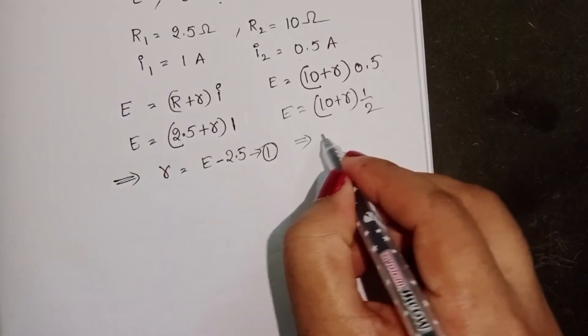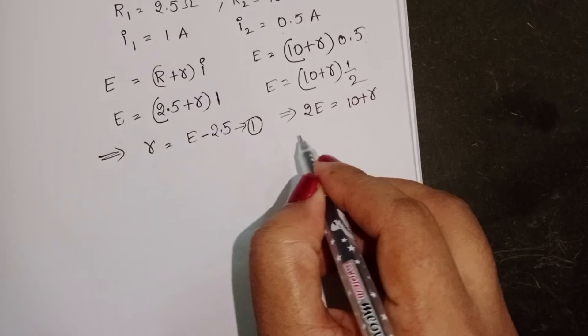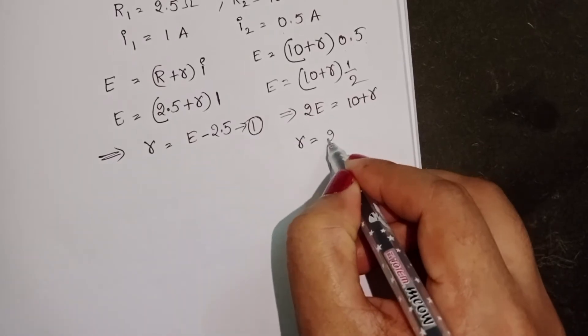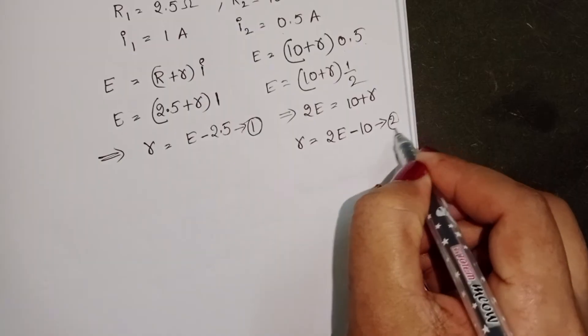From this, 2E equals 10 plus R. Internal resistance is equals to 2E minus 10. Take this as equation 2.